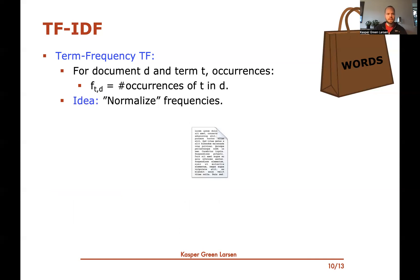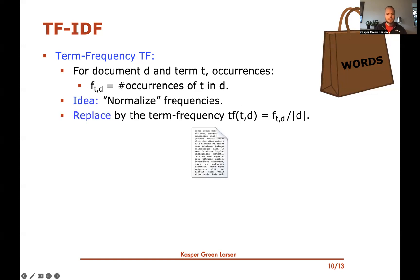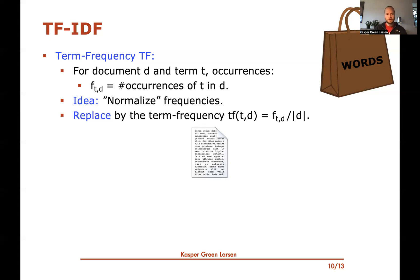The idea with term frequency TF is to normalize these frequencies. The TF of term T in document D is the number of occurrences of T in D divided by the length of D — so it's the fraction of words in document D that are equal to term T. Now if we take bag of words and replace every term count by term frequency, the sum of all coordinates is just going to be one. This is a way of normalizing frequencies that occur in a document.